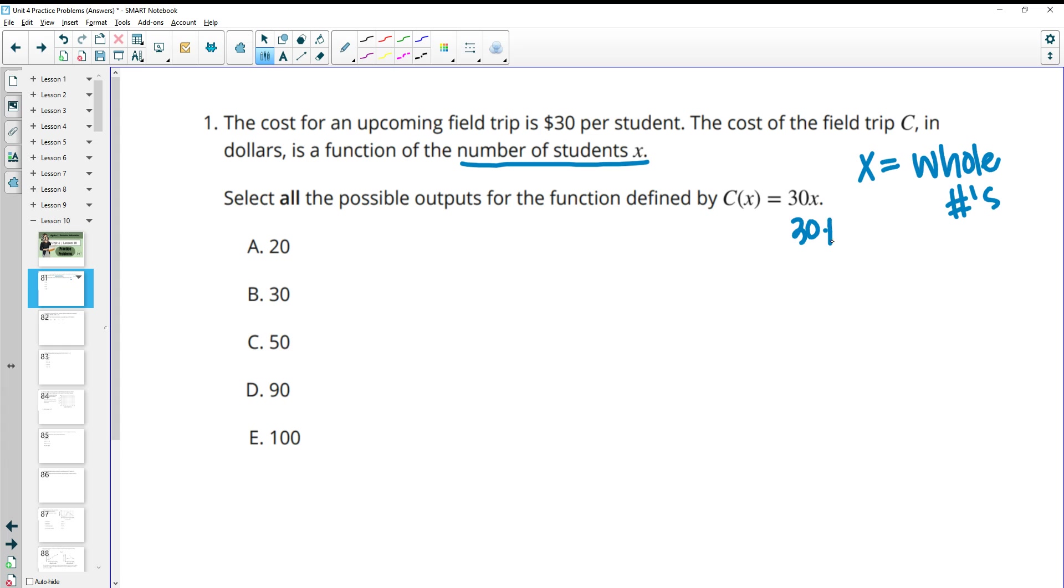So the outputs here are going to depend on X being a whole number. We could do 30 times 1, so we could get $30. We could do 30 times 2 students, giving us 60. 30 times 3 would give us 90 and so on. So these outputs are going to be multiples of 30. Those are the only ones that are going to be possible. So 20 is not possible. 30 would be that one student went. 50 isn't going to be possible. 90 would be good, that would be three students. And then 100 would not be possible.